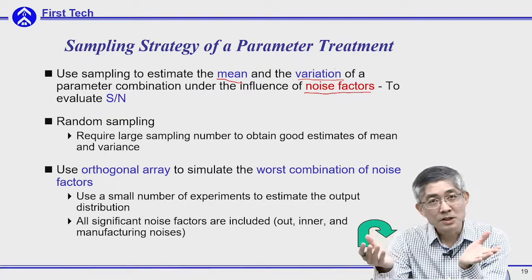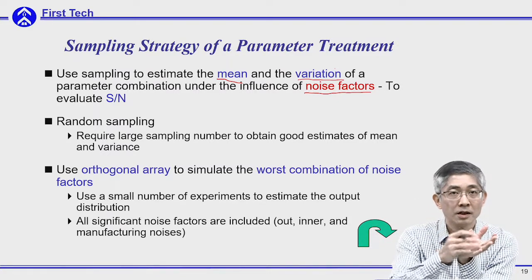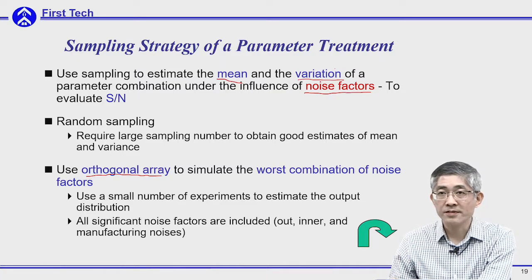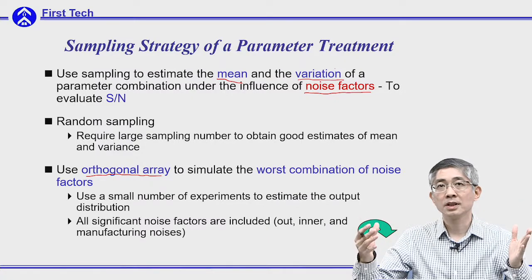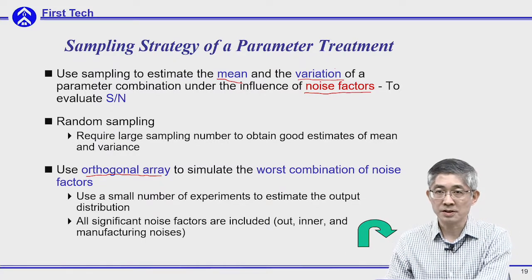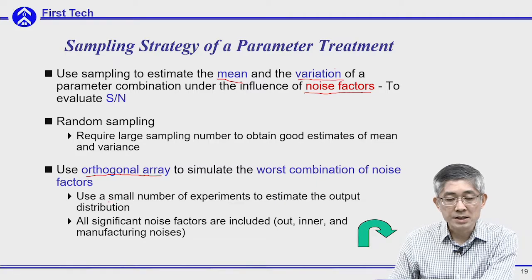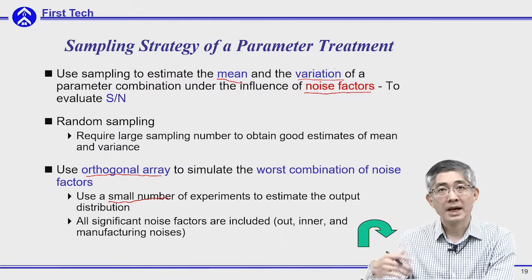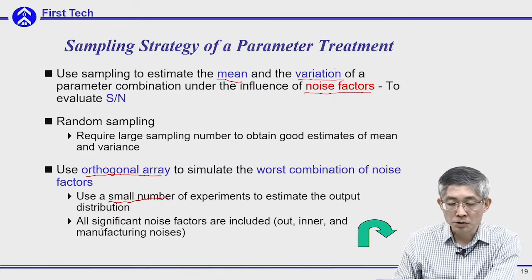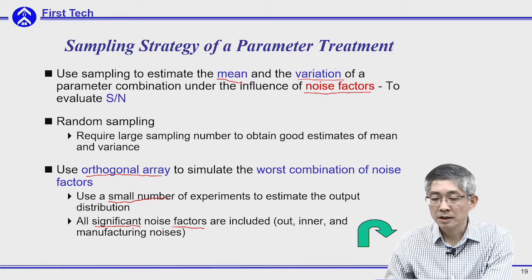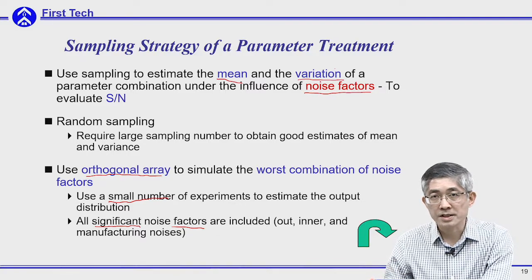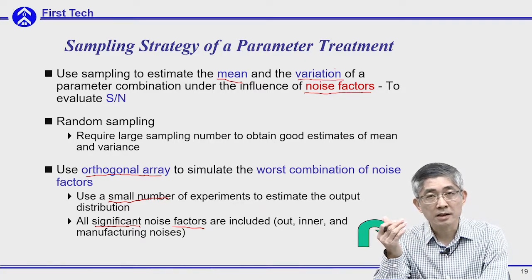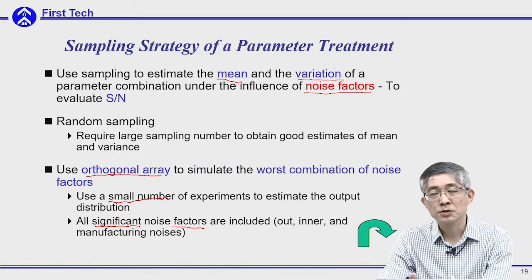Sounds familiar, right? Because we are using a similar concept as the orthogonal array for control factors. So Taguchi proposed to use another orthogonal array to lay out the noise factors, in order to simulate the possible worst combination of noise factors when you put your product into applications. By using an orthogonal array, you can assure a small number of samples. However, you can still get a very balanced and symmetric sampling by considering all the influences of the noise factors. You need to include all important noise factors — inner noise, outer noise, and manufacturing noise. Usually, we use two levels for the noise factors because their influence will be mostly monotonic due to the small range.